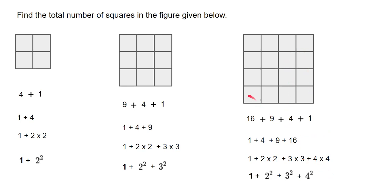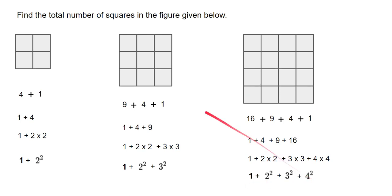How do we know? Because it is a perfect square — the number of rows equals the number of columns, one, two, three, four. If it is a four by four square, we go one squared plus two squared plus three squared plus four squared. If it is a three by three square, one squared plus two squared plus three squared. That is the generic formula for finding the number of squares in the figure shown.